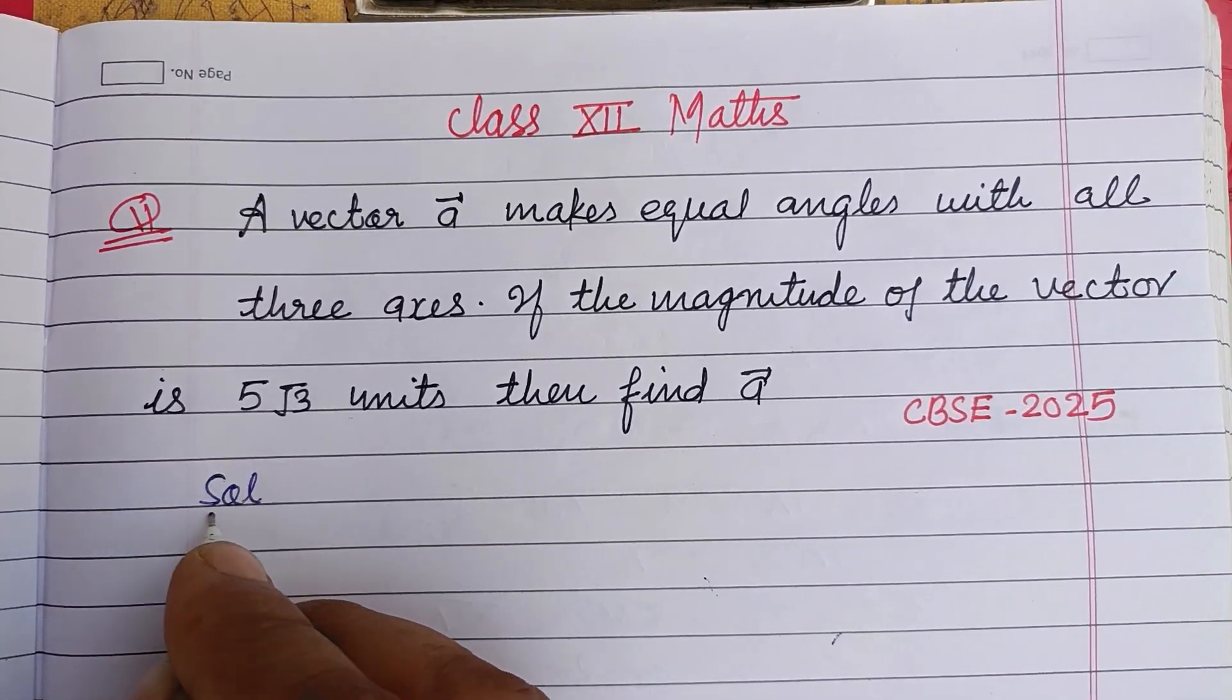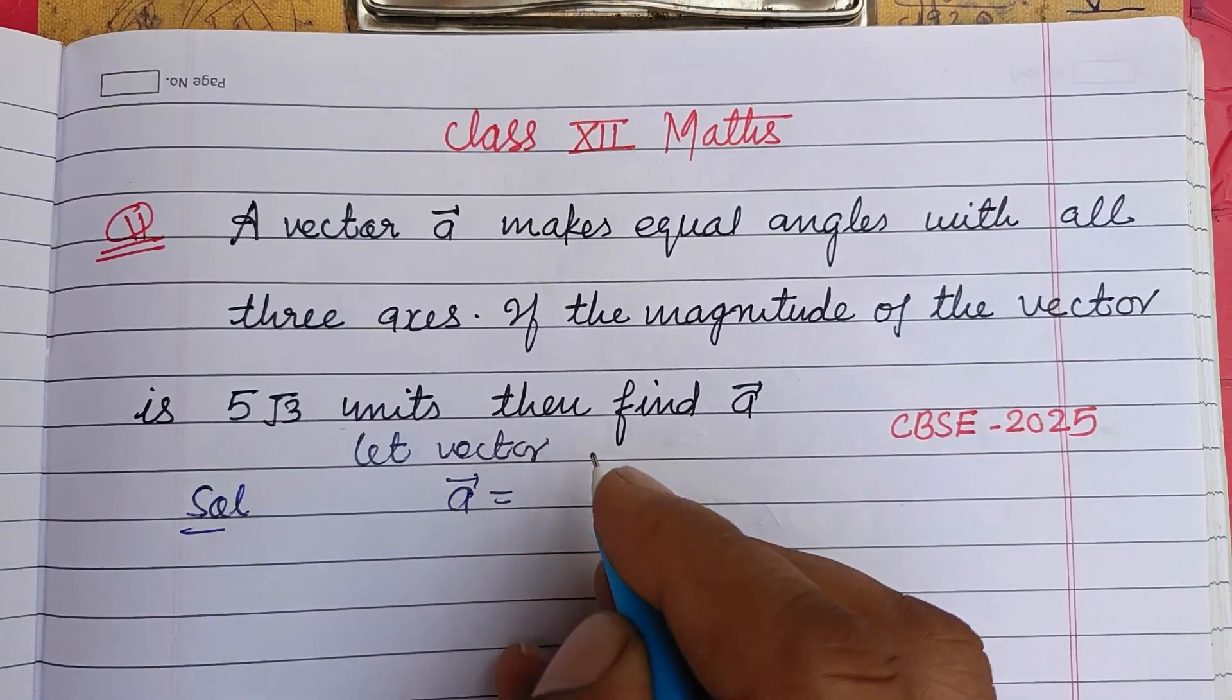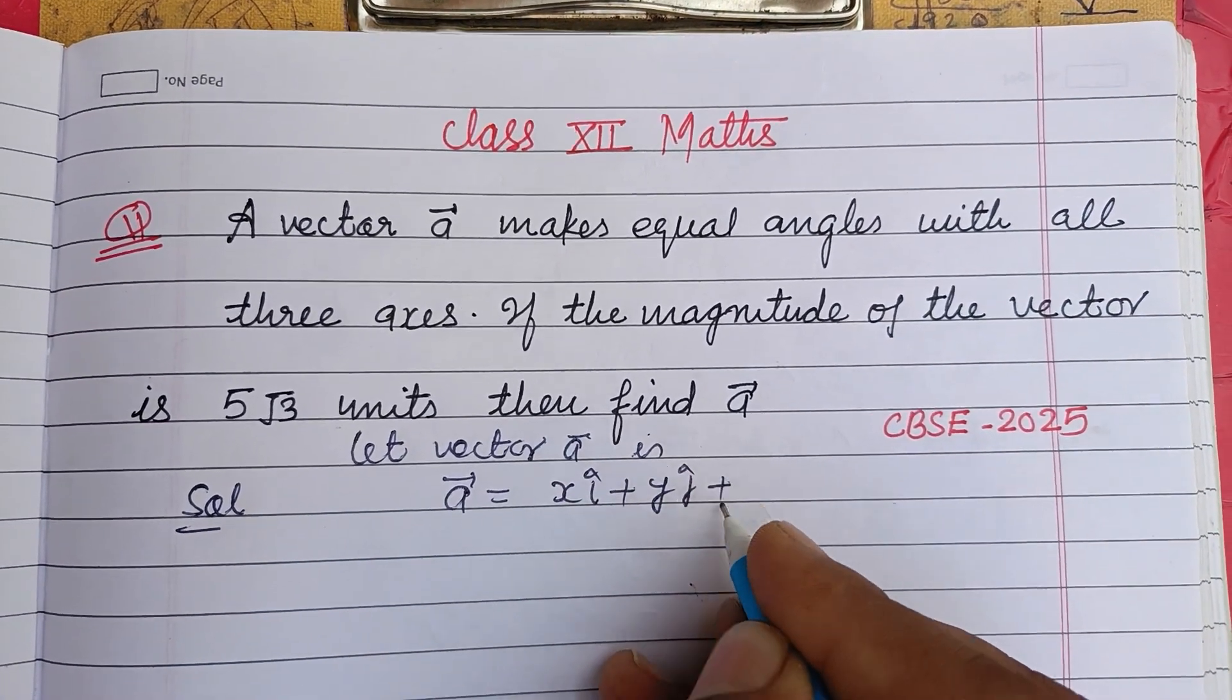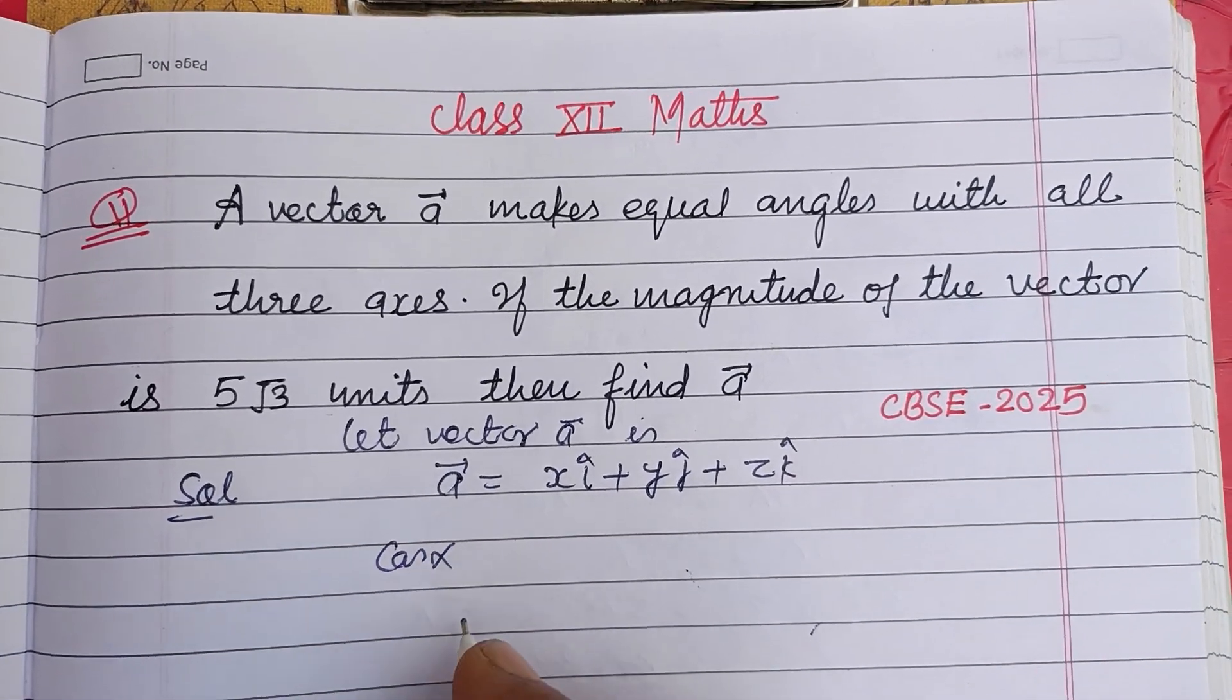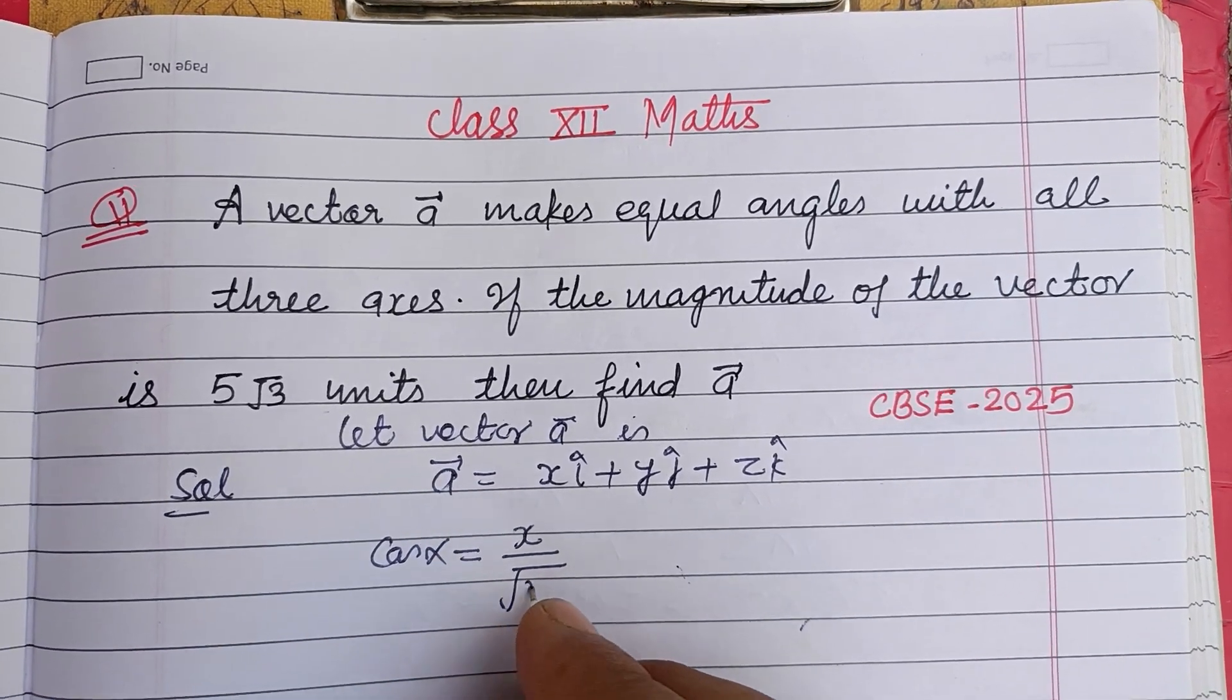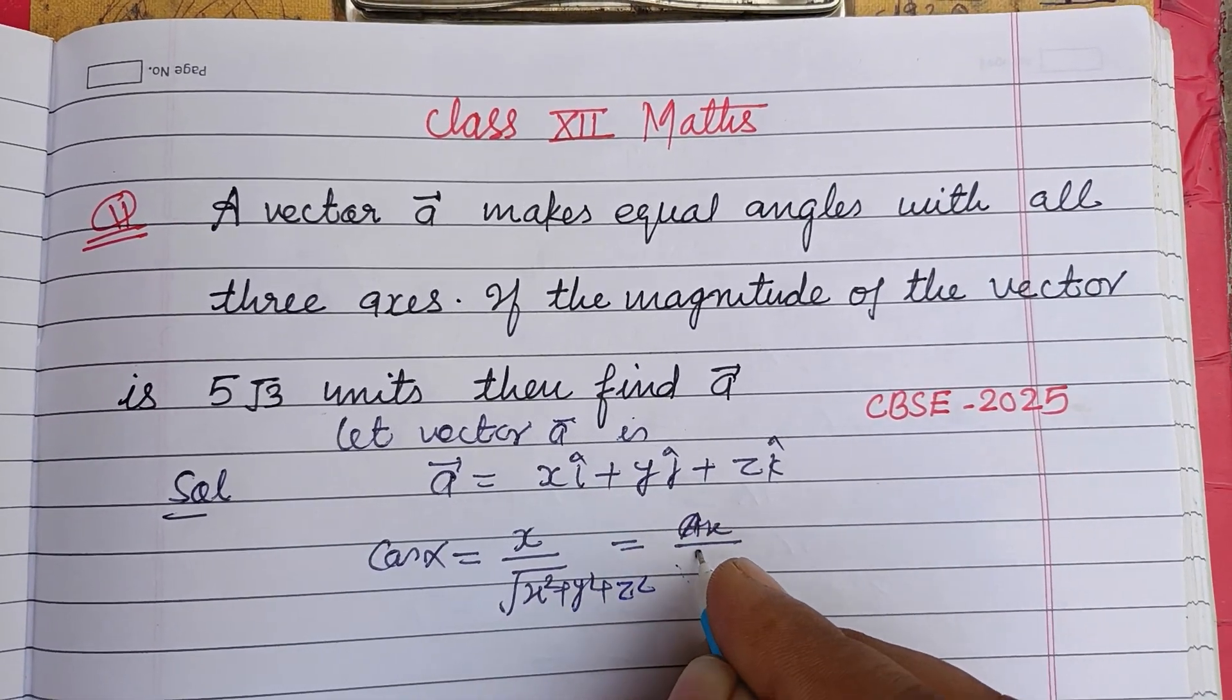Let vector a be x i cap plus y j cap plus z k cap. Then its angle cos alpha from the x-axis is x over root of (x squared plus y squared plus z squared), which is x over magnitude of a.